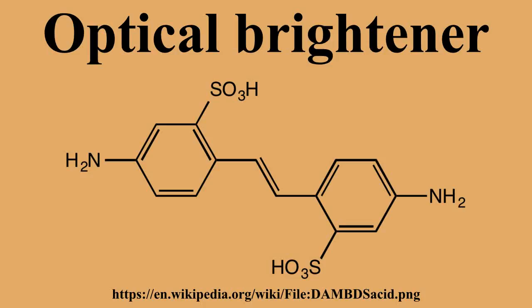Brighteners are commonly added to laundry detergents to make clothes appear cleaner, as normally cleaned laundry appears yellowish. Optical brighteners have replaced blueing, which was formerly used to produce the same effect. Brighteners are used in many papers, especially high brightness papers, resulting in strongly fluorescent appearance under UV illumination. Paper brightness is typically measured at 457 nanometers. Paper used for banknotes does not contain optical brighteners, so a common method for detecting counterfeit notes is to check for fluorescence.